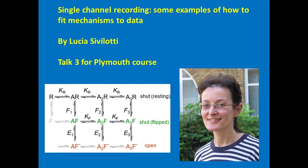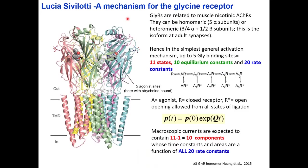I am Lucia Sivilotti and I'm going to tell you today how the work of my lab over several years, using single channel recording, has obtained an activation mechanism that describes the activation of the glycine receptor. The glycine channel is a member of the pentameric ligand-gated ion channel superfamily and is related to muscle nicotinics. The glycine receptors can be homomeric with all five subunits the same, or heteromeric as it is at synapses.